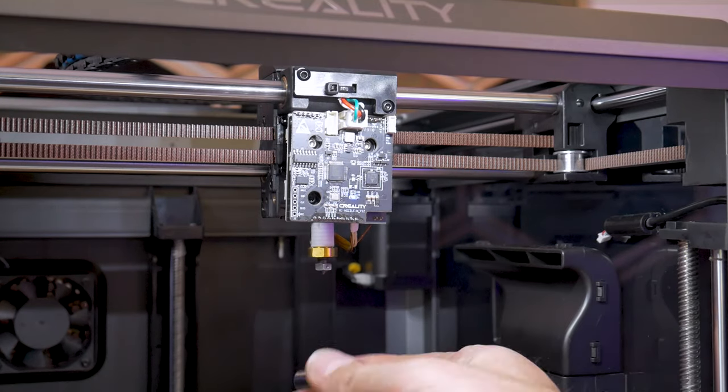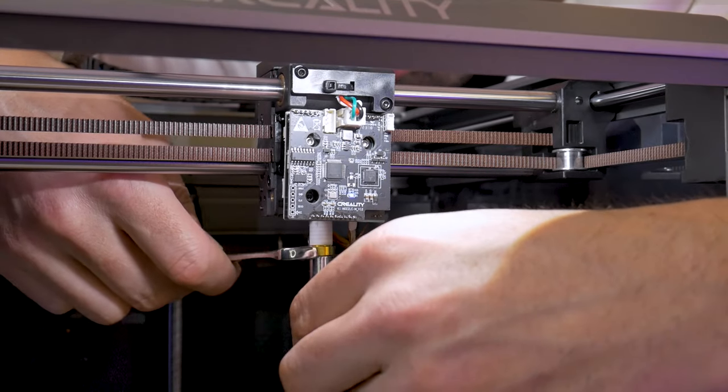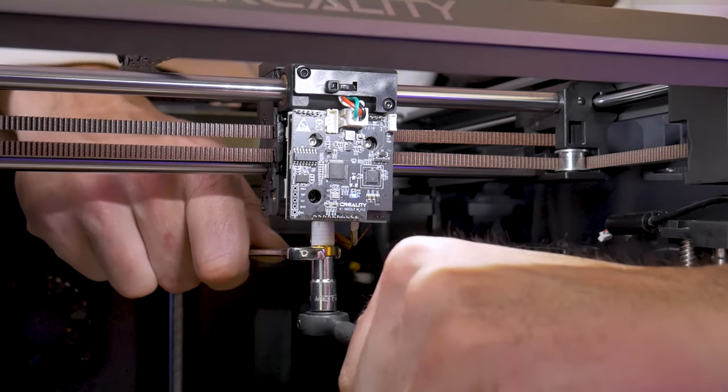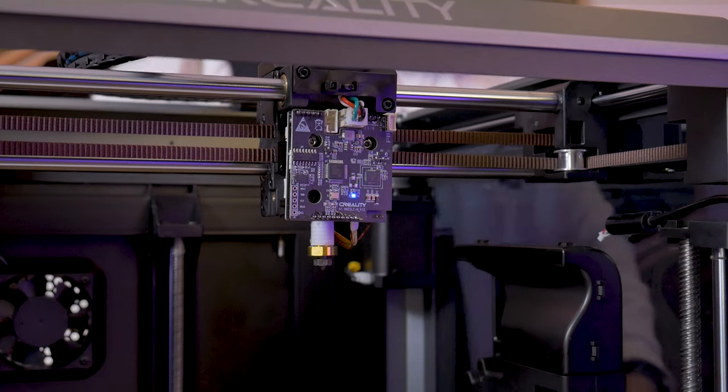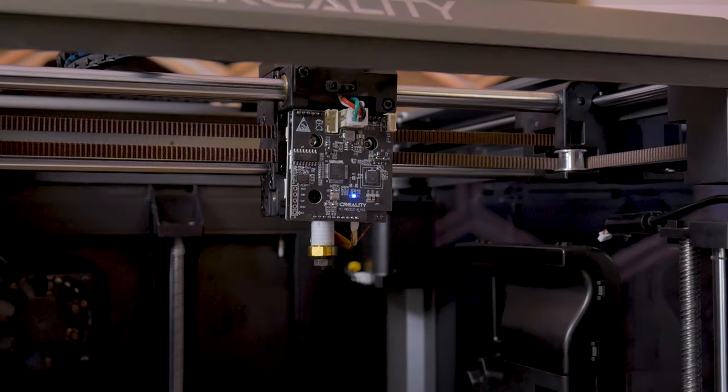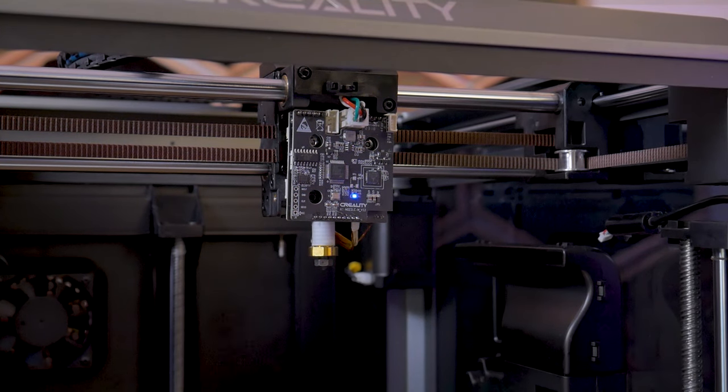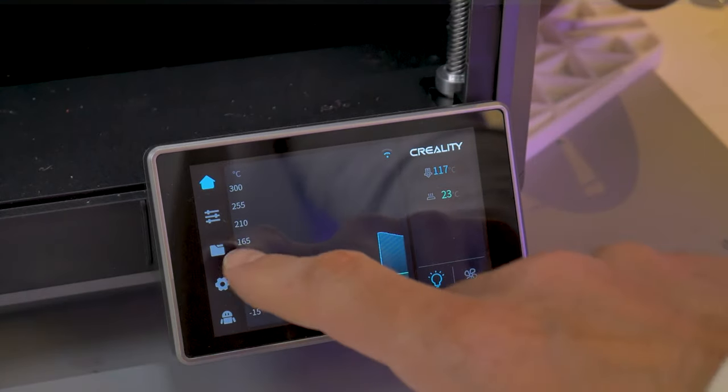I applied some high temperature copper based anti-seize to those threads and then I started threading the nozzle in by hand. Since the heater is still on, the nozzle will get hot very quickly, so you'll want to switch back to your tools to do the final tightening. Always keep in mind with your tools, these are relatively small parts and you do not want to over tighten your nozzle. Over tightening can lead to things breaking.